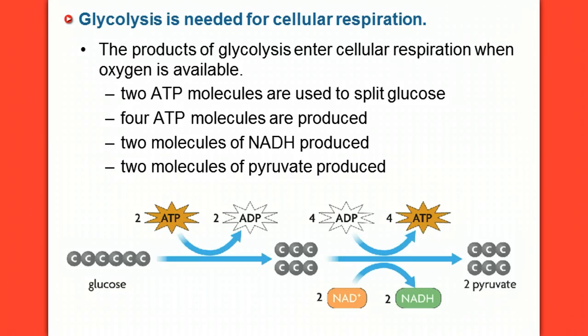So when we look at the chemical reaction, again, six carbon molecules. We've got to use two ATP in order to split that molecule in half. We get two pyruvates, two of those three carbon molecules.